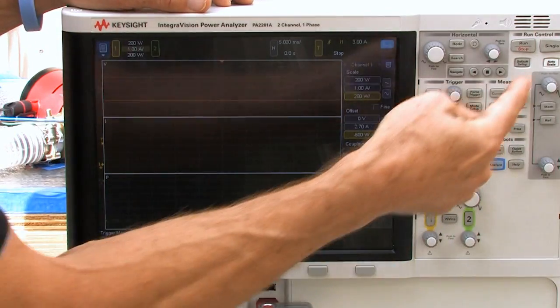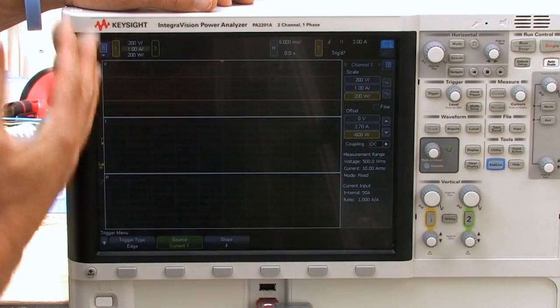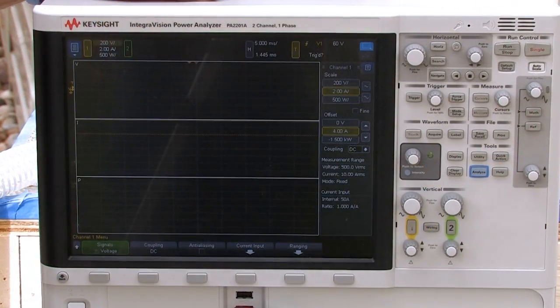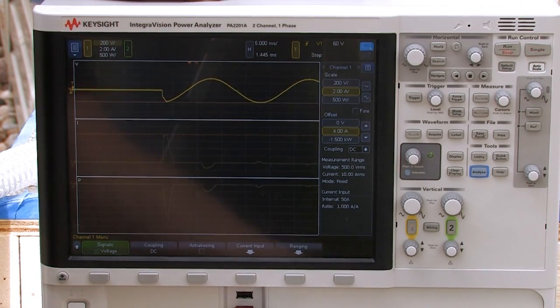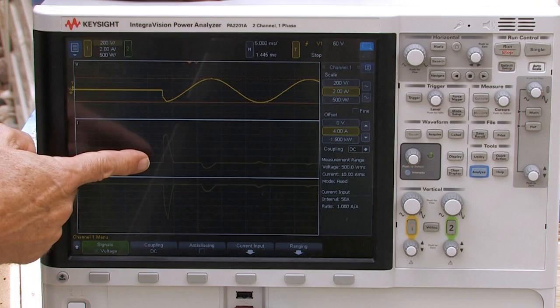Just like an oscilloscope, we're going to hit a single measurement, so we just come up here and press single, and now we have it triggered. We'll go ahead and get the water flowing through the pump. Now we'll energize the pump. And so here you can see the inrush current measurement.